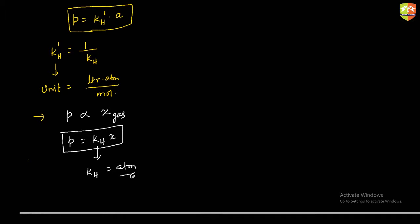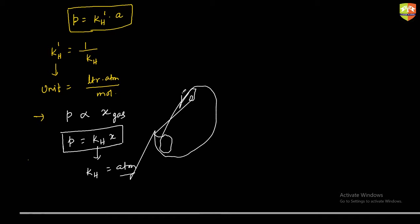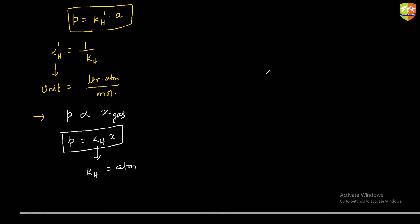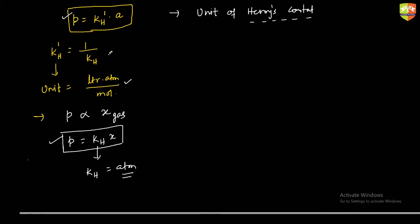Which expression to use in a question depends on the unit of KH given. To determine this: find the unit of KH according to what is given in the question. If the unit is ATM, use P = KH × X; if the unit is litre·ATM/mol, use P = KH' × A; if the unit is mol/L/ATM, use A = KH × P.